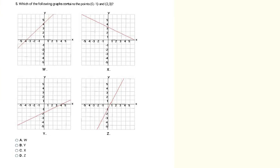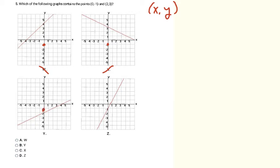Here we identify the correct graph from two given points: (0, -1) and (2, 3). Coordinates are always x first, then y. We look for the graph that passes through both points. Checking W: the line doesn't go through (0, -1) — eliminated. X and Y also don't pass through (0, -1) — eliminated. Z does pass through (0, -1) and also through (2, 3), so Z is the correct answer.